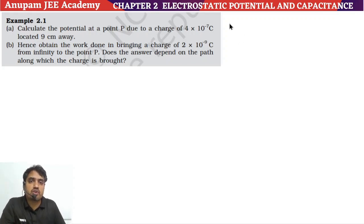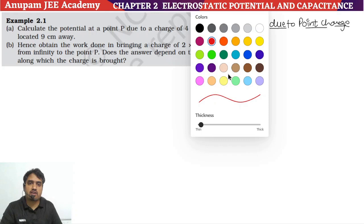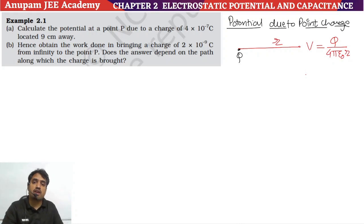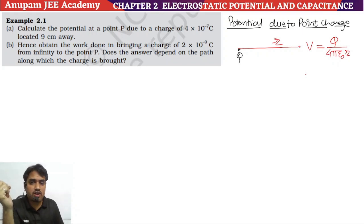We are talking about potential due to a point charge Q at distance R. The electric potential, which is a scalar quantity, is given by V = Q / (4πε₀R). It is very important to remember this formula: Q divided by 4 pi epsilon-naught R.